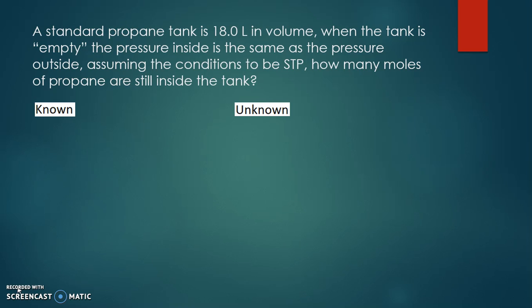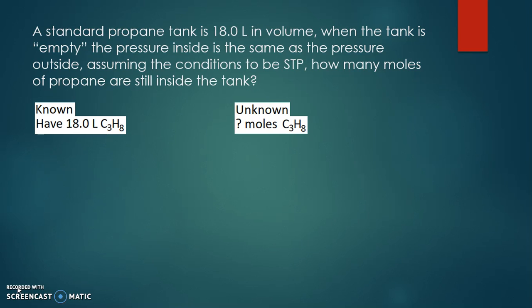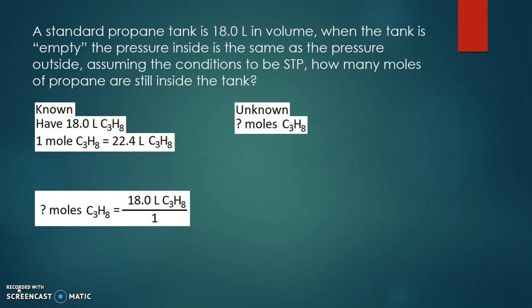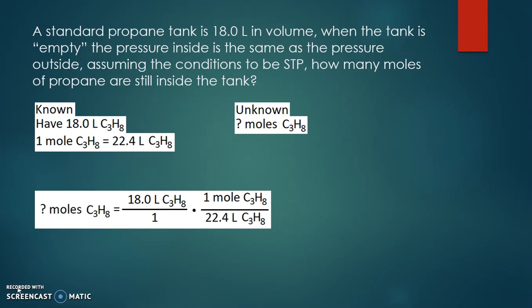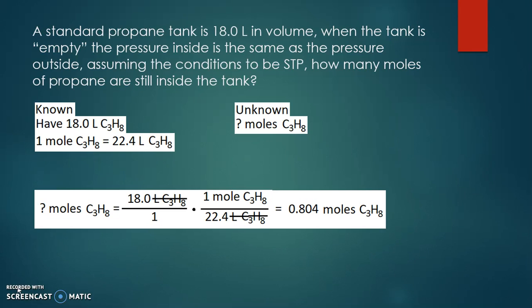How many moles of propane are still inside the tank when it is empty? We know the volume is 18 liters but we don't know the number of moles. One mole of any gas is 22.4 liters, so one mole of propane is 22.4 liters. Taking 18 liters of propane over one, with 22.4 liters on the bottom and one mole of propane on top, liters cancel out and 18 divided by 22.4 gives us 0.804 moles of propane still remaining.